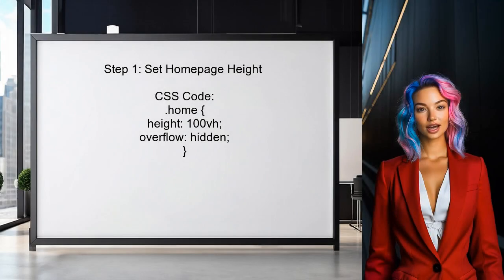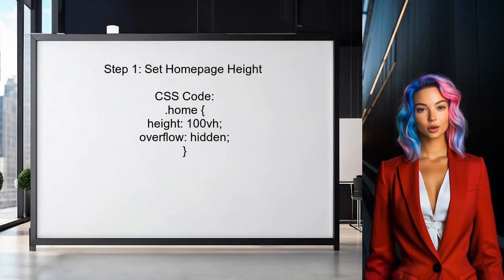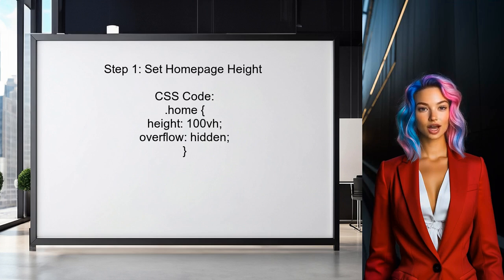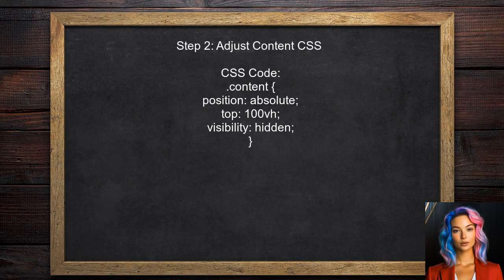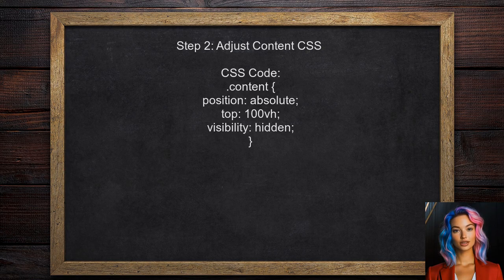To address the issue of white space under the homepage content, the user should first ensure that the homepage section takes up the full height of the user's screen. This can be achieved by setting the height of the homepage to 100vh. Next, the user should adjust the CSS for the content section. This will allow the content to be positioned correctly and ensure that it is visible when the user scrolls down.